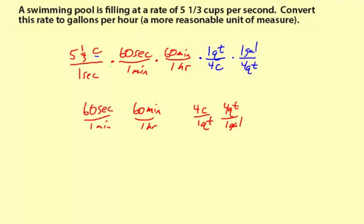This should take us all the way. Let me show you what happens with the units. Seconds in the denominator and seconds in the numerator — those simplify out. Minutes in the denominator and minutes in the numerator — those simplify out. That leaves cups in the numerator and hours in the denominator, so we have hours — halfway there. Then cups in the numerator up front and cups in the denominator over here — those simplify out. Quarts in the numerator and quarts in the denominator — those simplify out. So what we're left with is gallons in the numerator and hours in the denominator: gallons per hour, which is exactly the conversion we want.